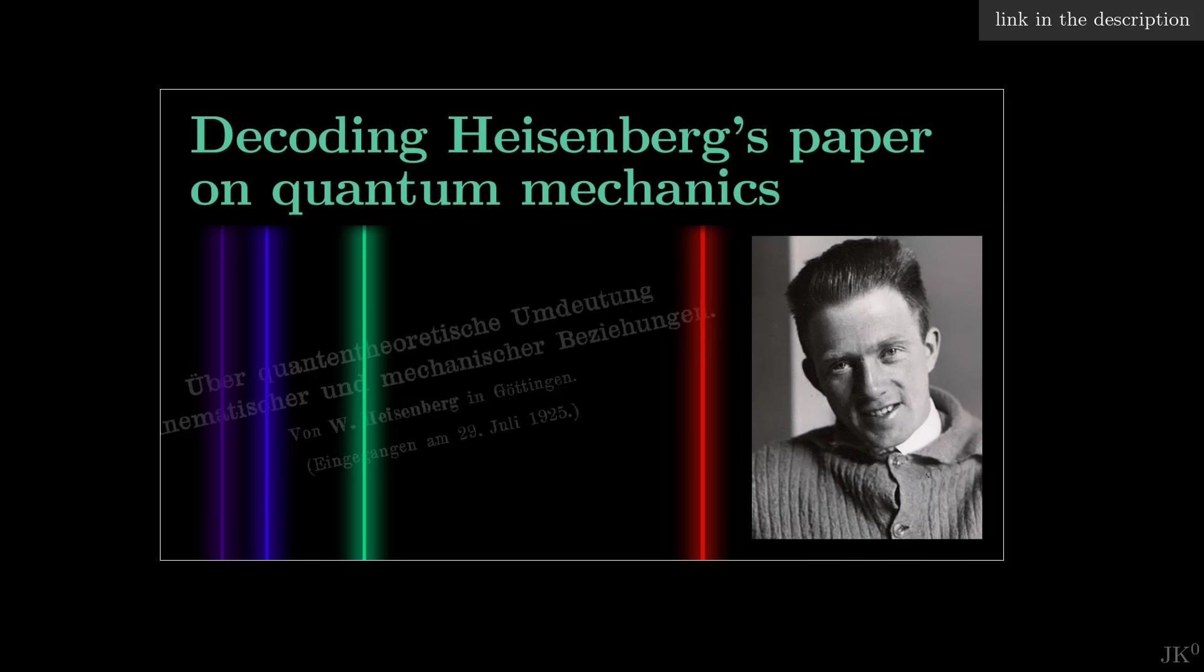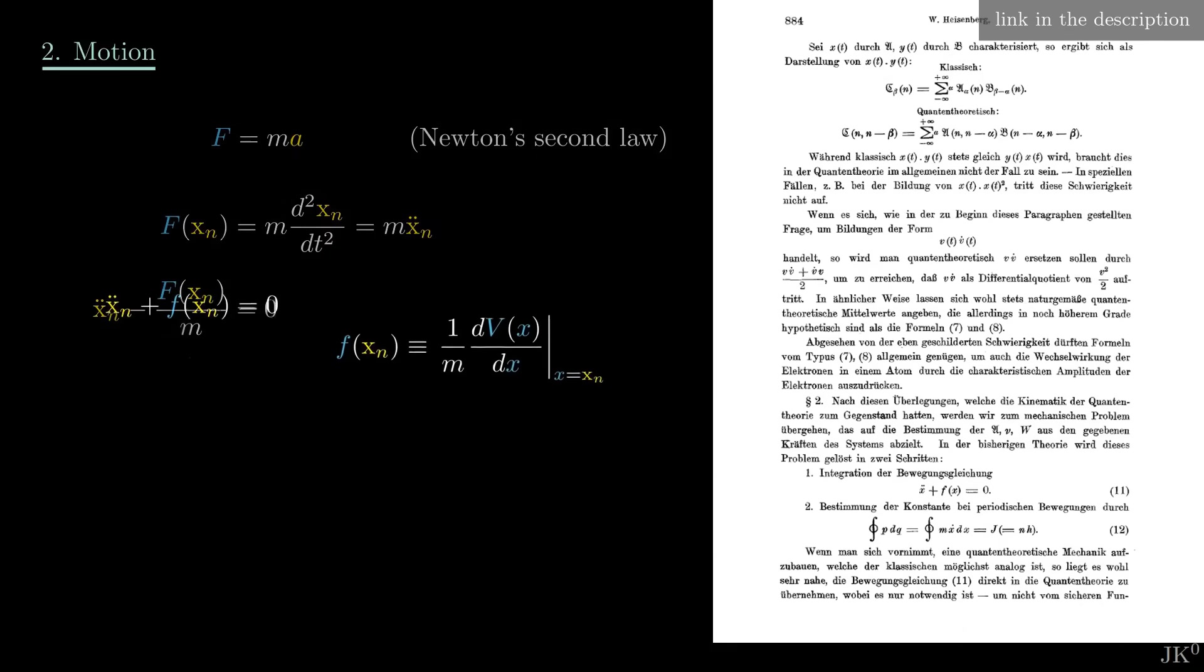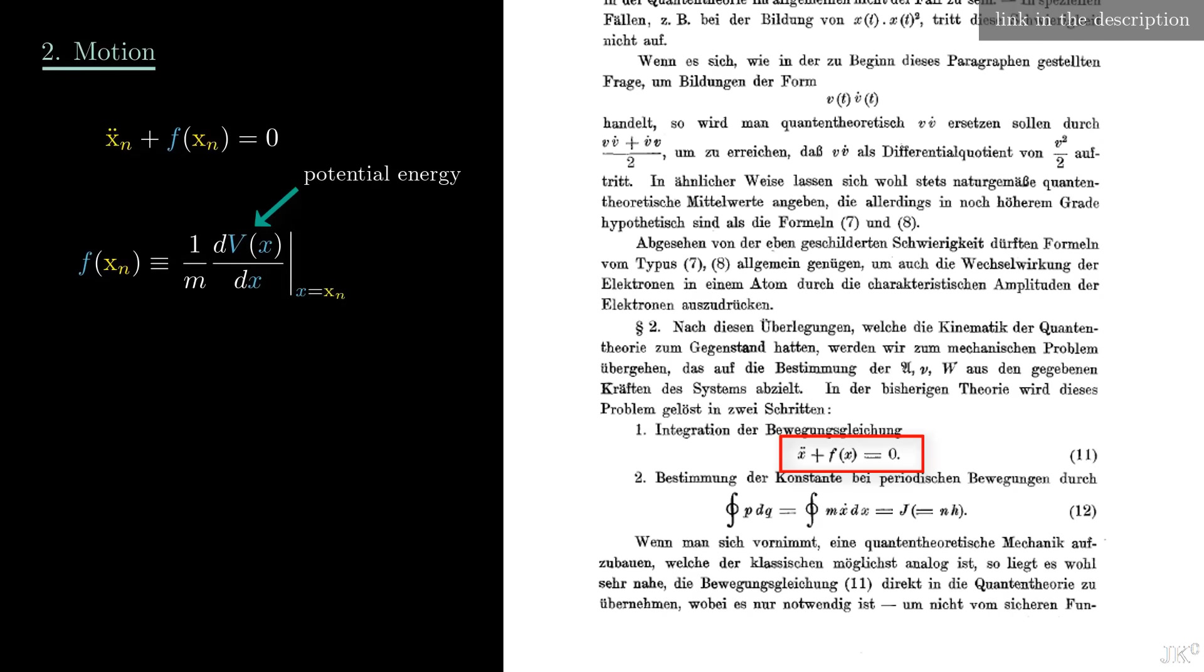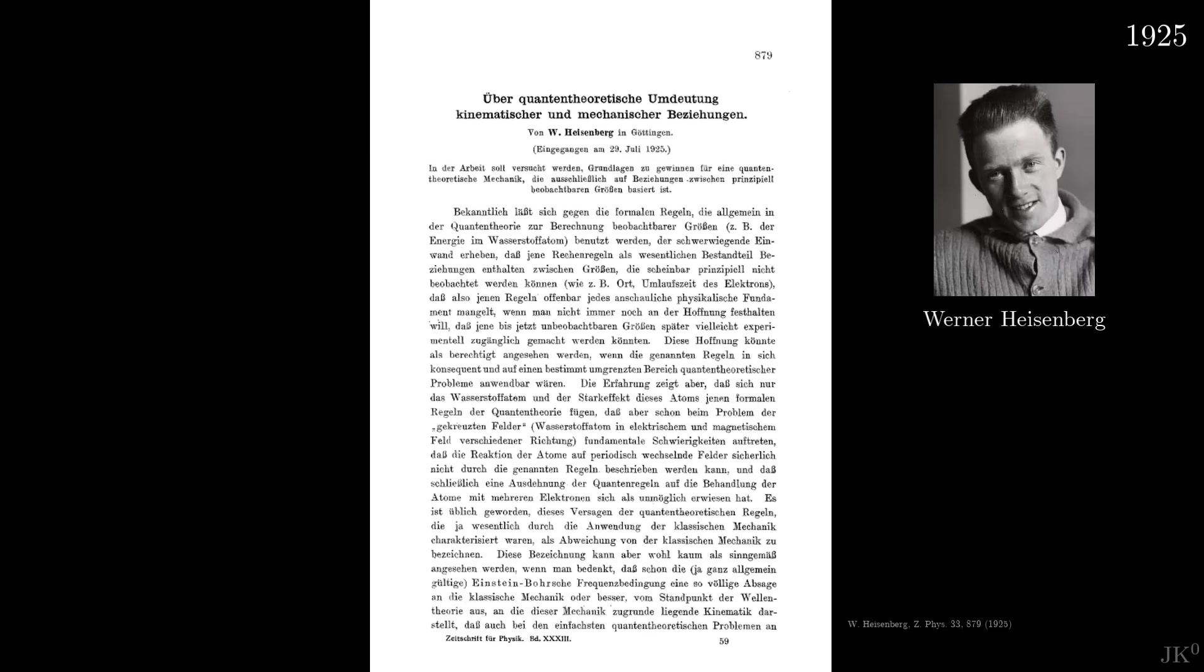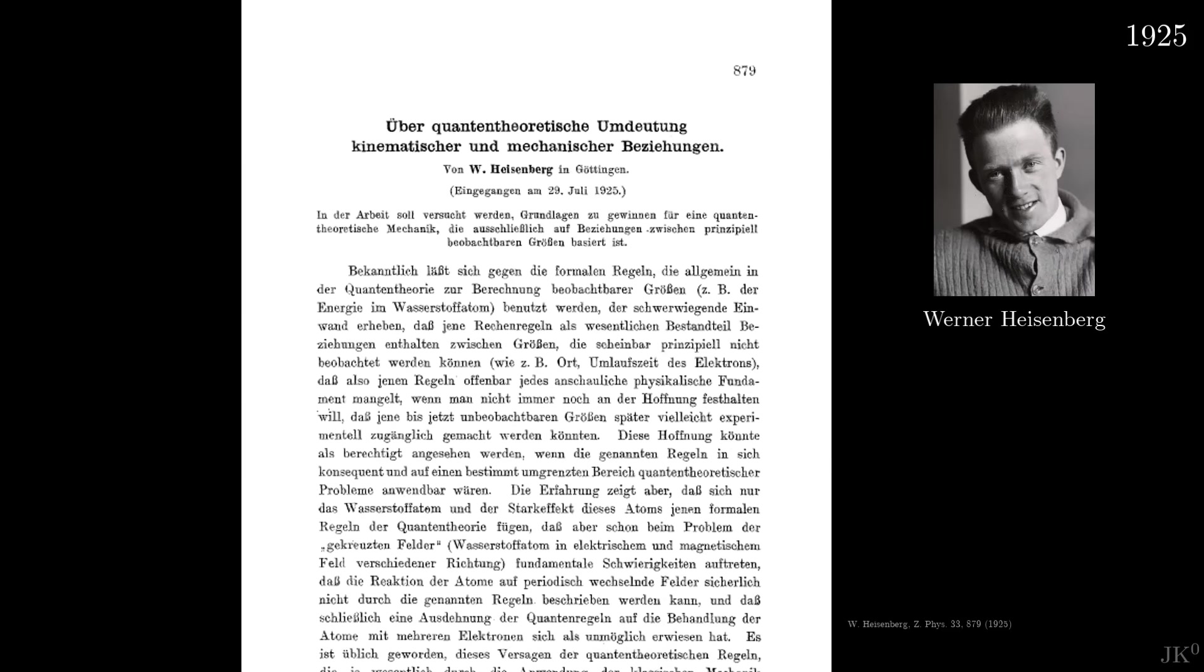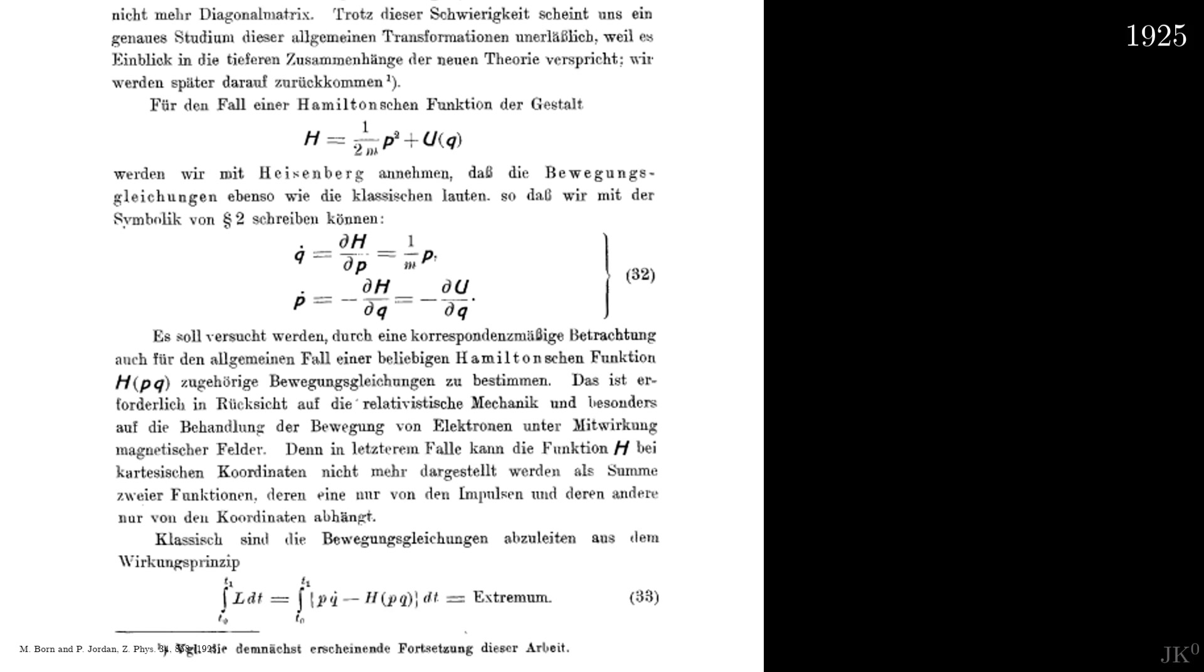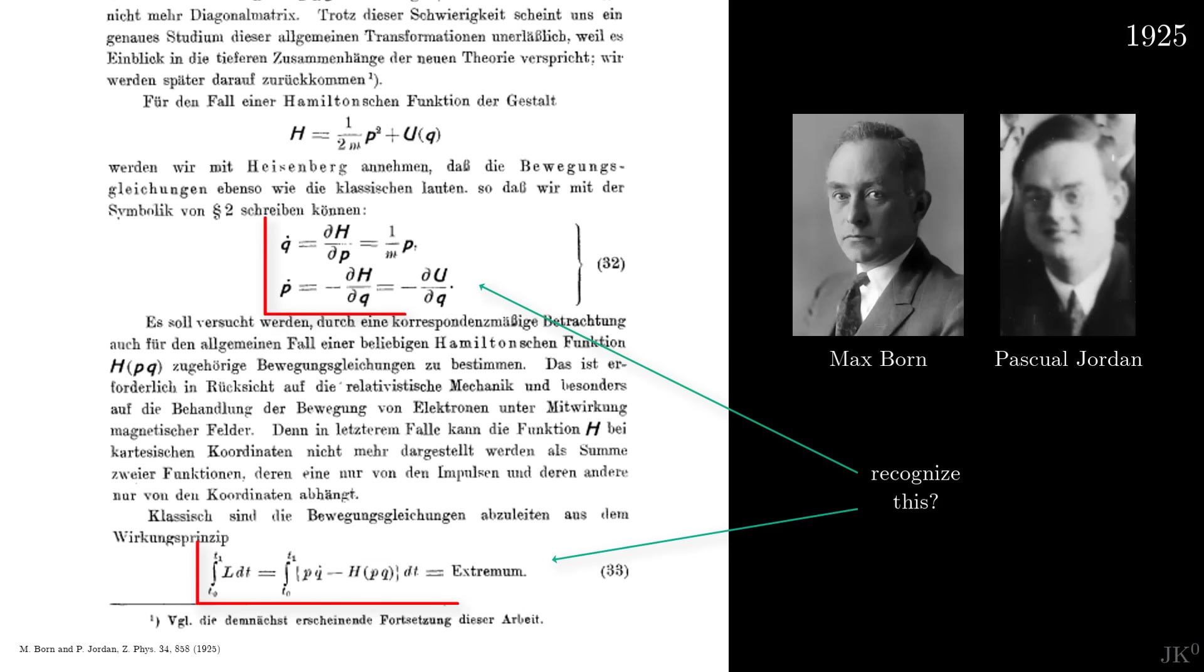Interestingly, as I show you in my video decoding Heisenberg's paper creating quantum mechanics, Werner Heisenberg's theory was Newtonian. The final step to formalize quantum mechanics was to take the groundbreaking ideas in Heisenberg's paper and write them in the language of analytical mechanics. This is what Max Born and Pascual Jordan did in the autumn of 1925.